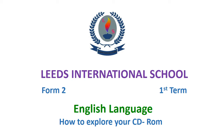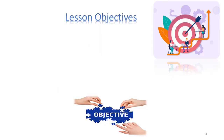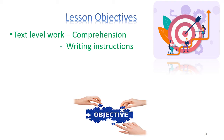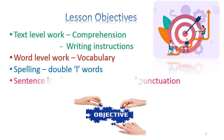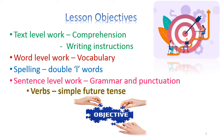Form 2, First Term, English Language, Unit 2.3. The lesson is how to explore your CD-ROM. The lesson objectives are: under text level work, we are going to discuss about the comprehension text and writing instructions. You will learn some new vocabulary words. Under the spelling section, you will learn words with double L. And under grammar and punctuation, we are going to talk about simple future tense.